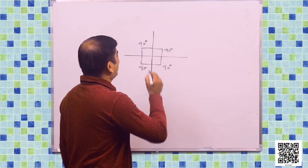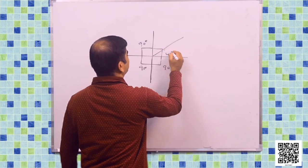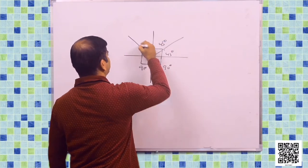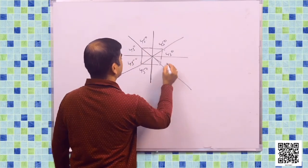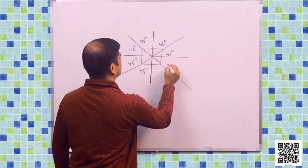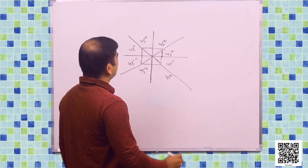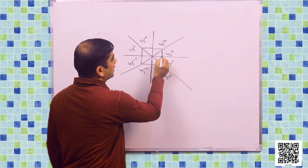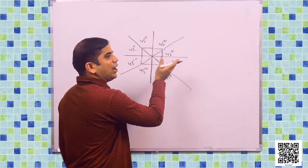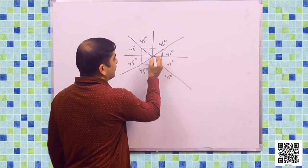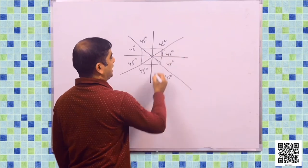If I equally divide each quarter, we will get 45 degrees each. So this angle is 45 degrees. That means if from here to here it is 180 degrees, so I can say that from here, if any object starts turning from this position, it turns 45 degrees to reach over here in this direction.